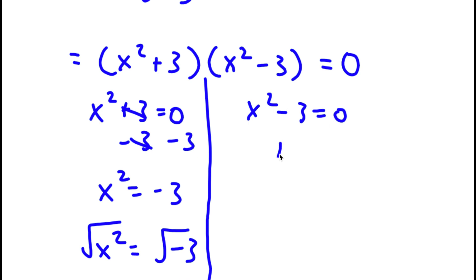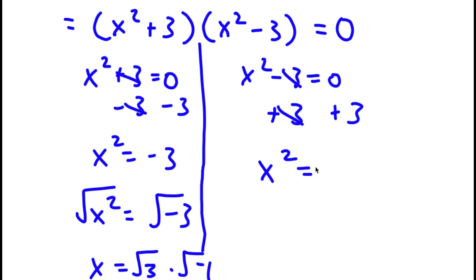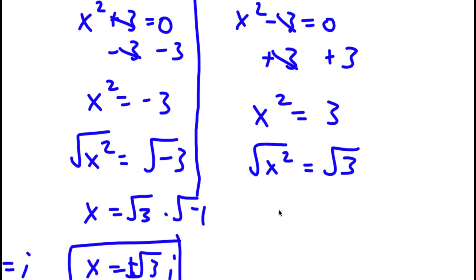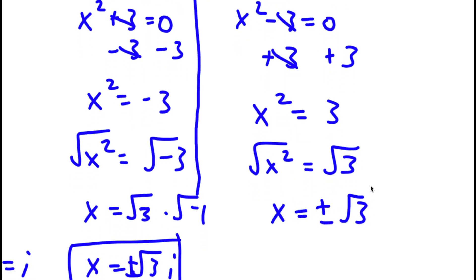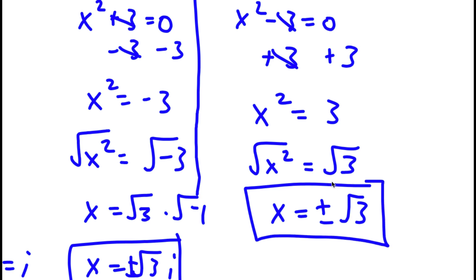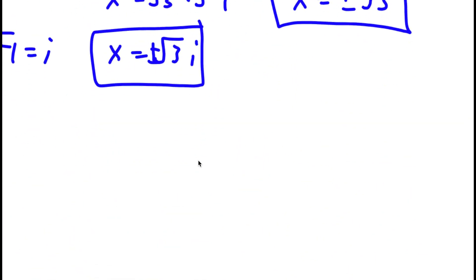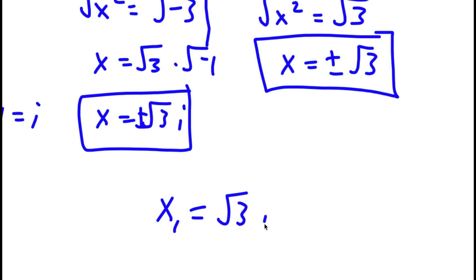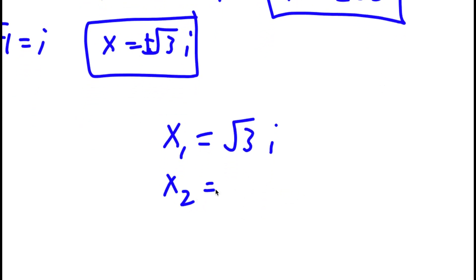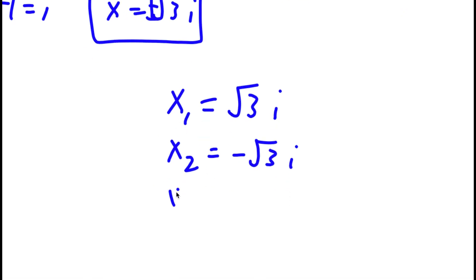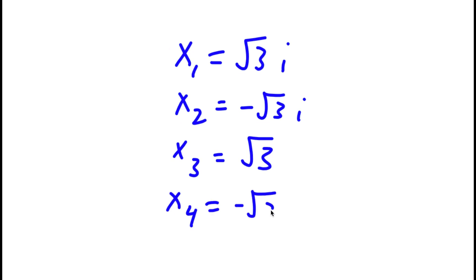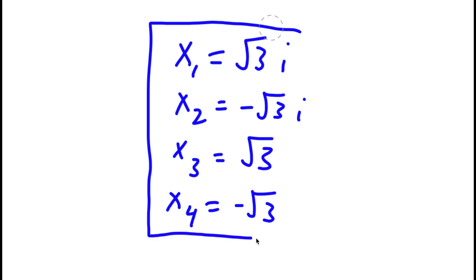For x squared minus 3 equals 0, I add 3 to both sides, giving x squared equals positive 3. Taking the square root of both sides, x equals positive or negative square root of 3. So these are two more solutions. My four solutions are: x equals positive square root of 3i, x equals negative square root of 3i, x equals square root of 3, and x equals negative square root of 3.